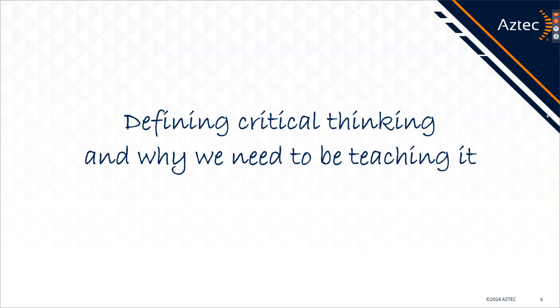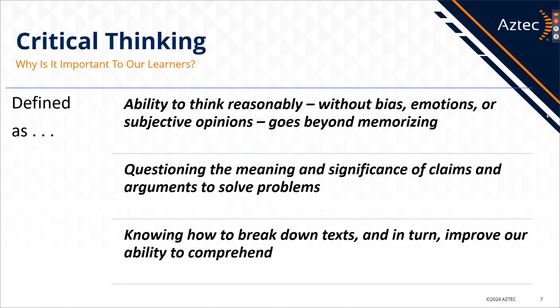As we go through, I usually love to do definitions so that we're all on the same page. There are two definitions I want to bring you in particular today — think about those and how you can use them in your classroom. This is a broad definition, and it starts with our ability to think reasonably. That means we don't have bias thrown in, no emotions or subjectivity. Critical thinking pulls that out, and it goes way beyond memorizing.